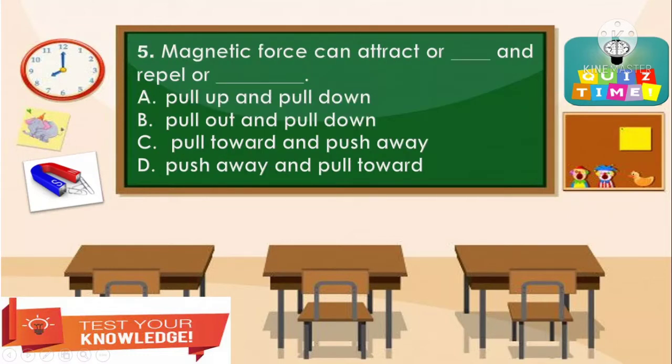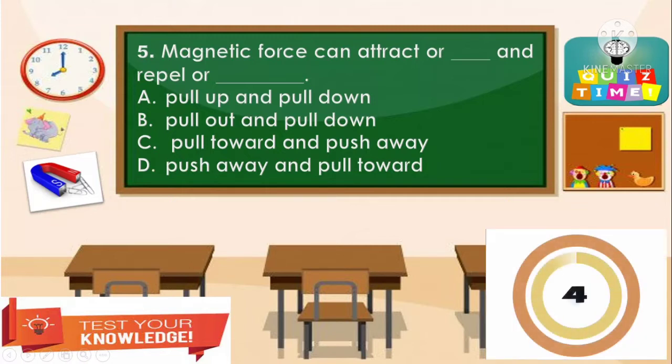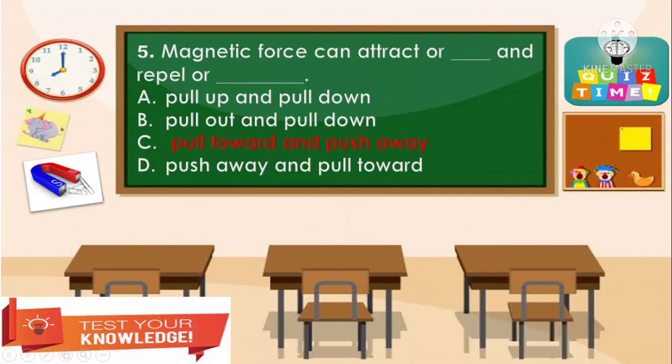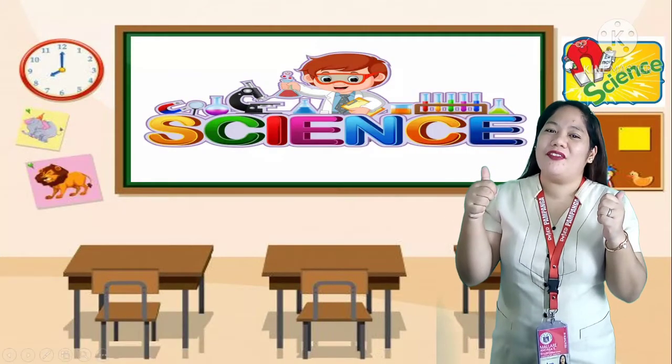Item number 5: Magnetic force can attract or blank, and repel or blank. A. Pull up and pull down, B. Pull out and pull down, C. Pull toward and push away, D. Push away and pull toward. The correct answer is letter C — pull toward and push away. Good job, kids!